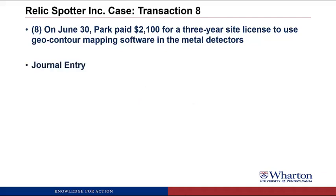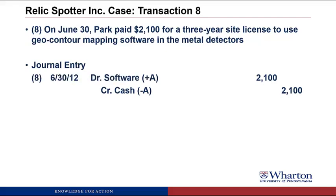For the journal entry, we're back to paying cash. Cash is an asset going down. We make assets go down with credits, so we credit cash for $2,100. The debit is that we're getting software. Software is going to be an asset because it's something we can use to run the metal detectors over three years. Assets go up with a debit, so we debit an asset called software for $2,100.